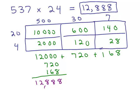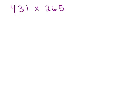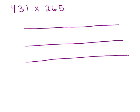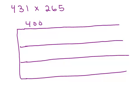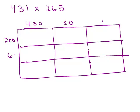Let's try another one. This time I have a 3 digit times a 3 digit, so I'm going to have a big old box here. I'm going to have 3 by 3. So it's going to be pretty big. So we're going to have 431 across the top. And then on the side I've got 265.